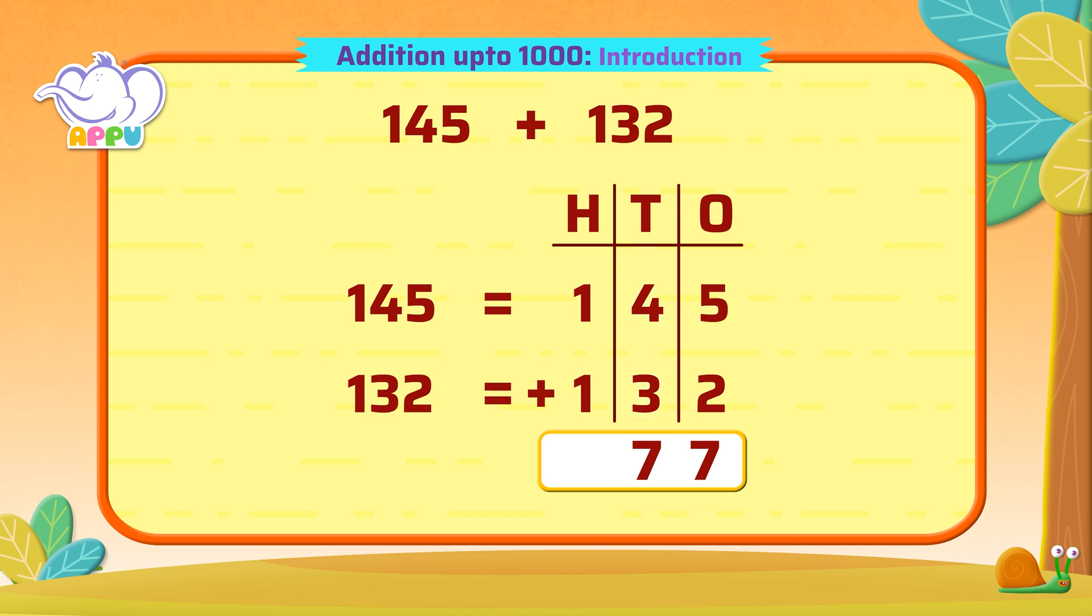And then the hundreds. 1 plus 1 is equal to 2. 2 in hundreds place. So, 145 plus 132 is equal to 277.